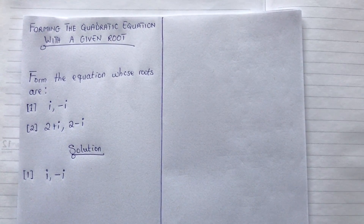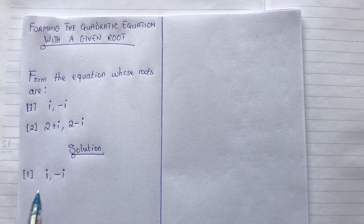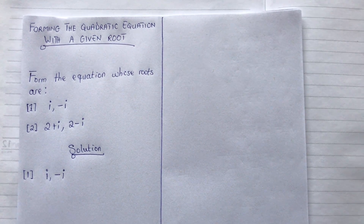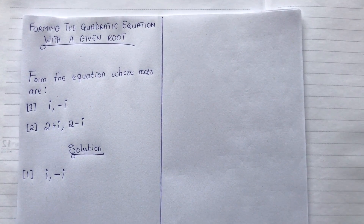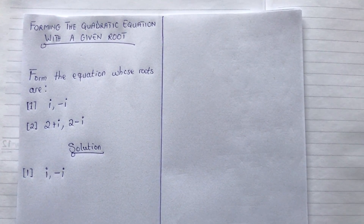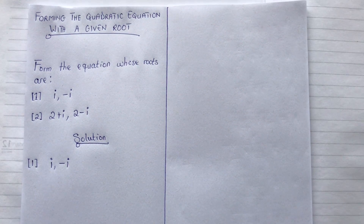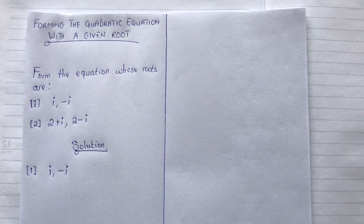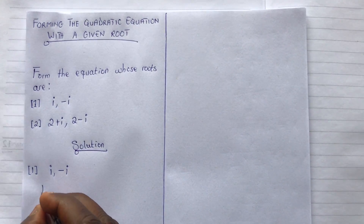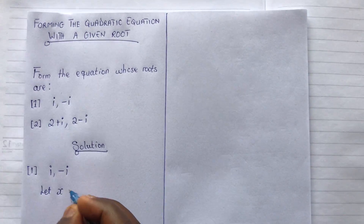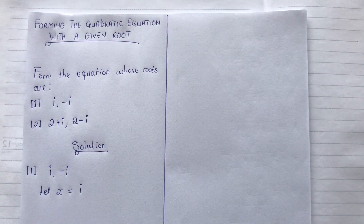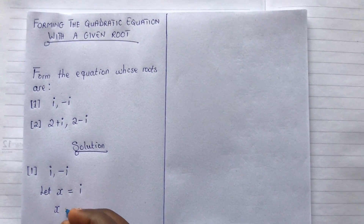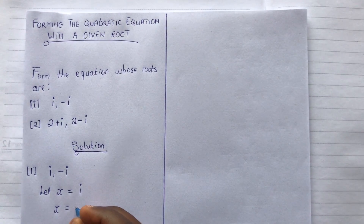For this first equation, the roots are complex — one is positive and one is negative, so it is imaginary. Let's assume the equation is in terms of the variable x. You can choose the variable of your choice, but I am going to settle for x. So we say: let x be equal to the first root, and let x be equal to the second root.